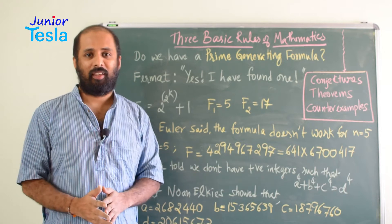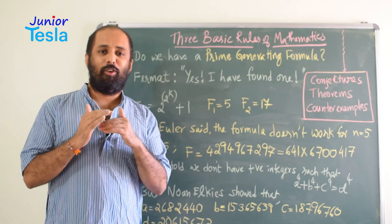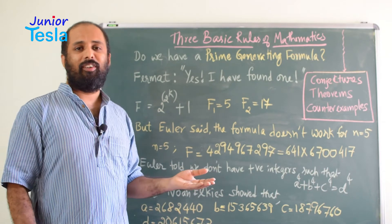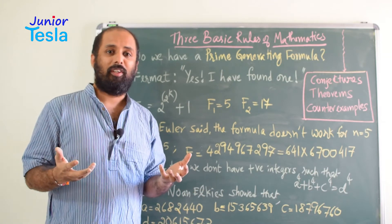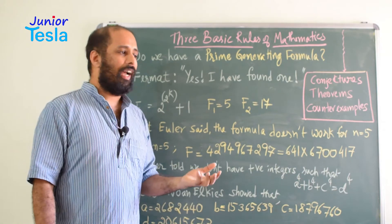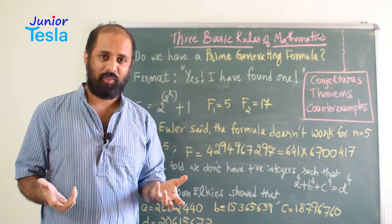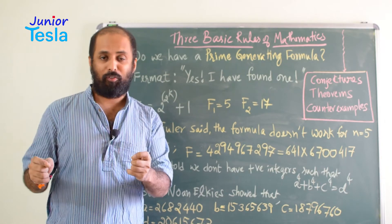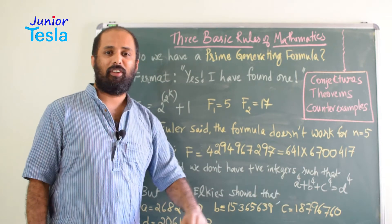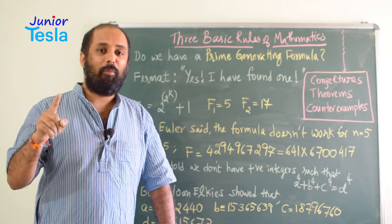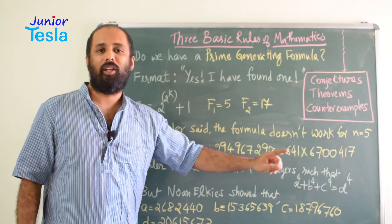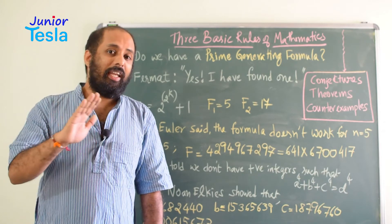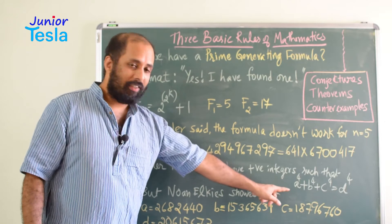Now, Euler was as famous as Fermat, or even more famous. He was a very established mathematician. And Euler also gave one statement. He told: suppose if I take an equation, a power 4 plus b power 4 plus c power 4 equal to d power 4, then there are no positive integers a, b, c, d that satisfy this equation. While working on some algebraic problem, he came up with this particular problem and told no positive integers a, b, c, d will satisfy this particular equation.